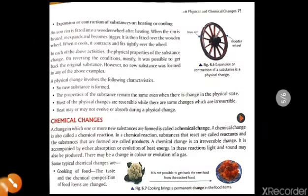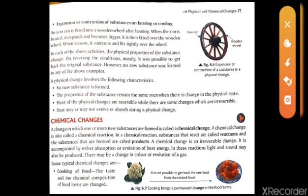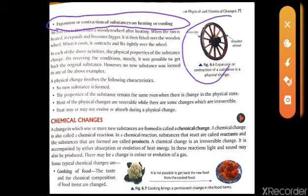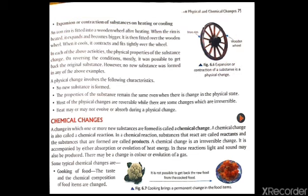One more example is the expansion or contraction of substances on heating or cooling. For instance, consider a wooden wheel with an iron rim on the outside. On heating, the iron expands, so it is placed over the wheel, and when it cools down it fits tightly. This is also a physical change — the shape has changed but no new substance is formed.